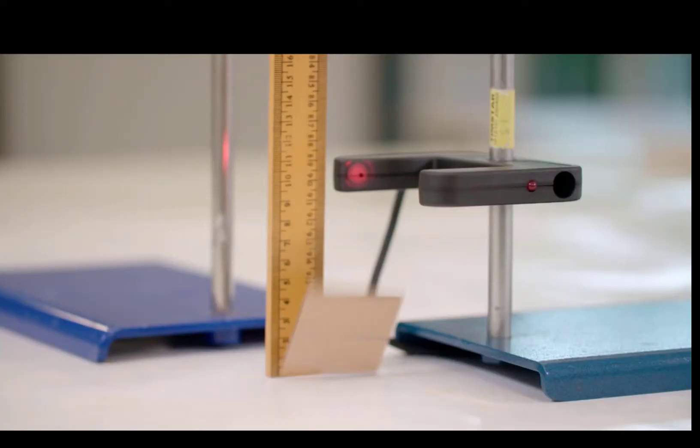Just before it hits the ground, its gravitational potential energy is almost 0 due to almost 0 height. Almost all the stored gravitational potential energy has been transferred into kinetic energy.